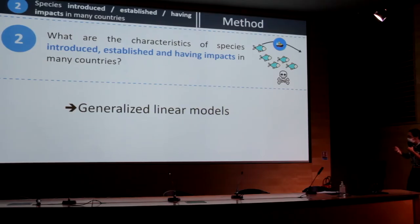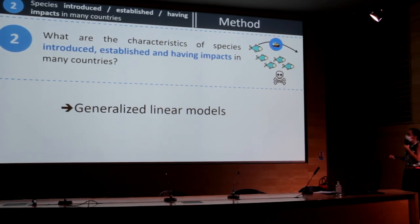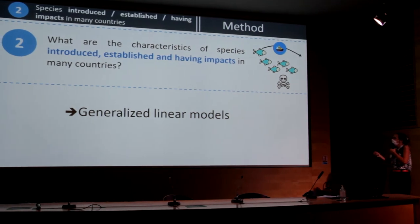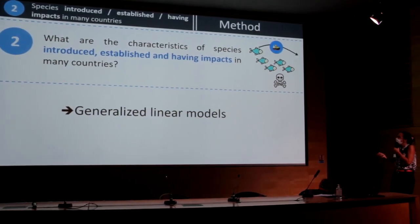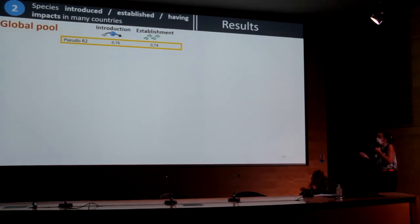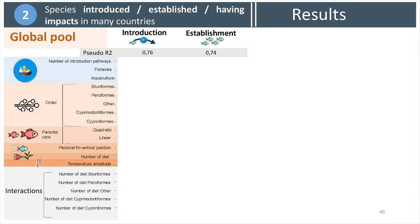Moving to our second analysis, we used the number of countries where species have been introduced, established, and had impacts in the FishBase database to determine characteristics of species introduced, established, and having impact in many countries. We used generalized linear models. The models for the introduction and establishment steps have good explanatory power, and these two steps have quite similar results.